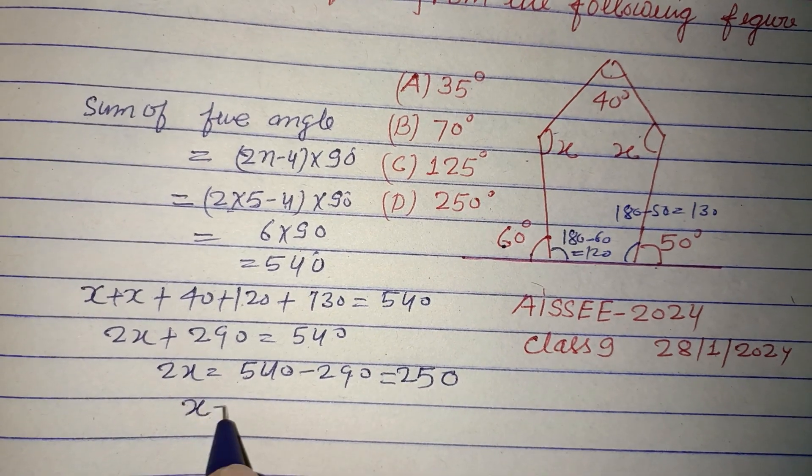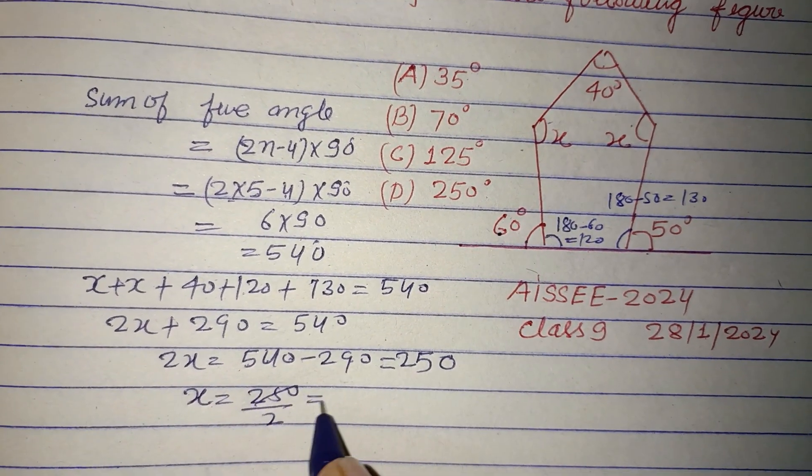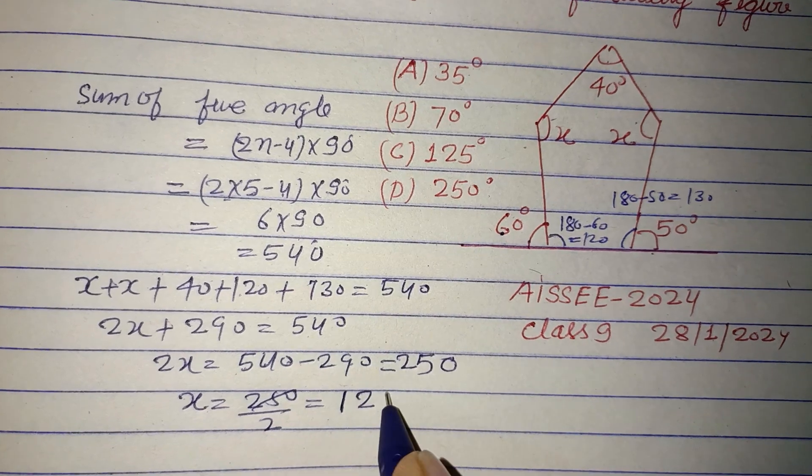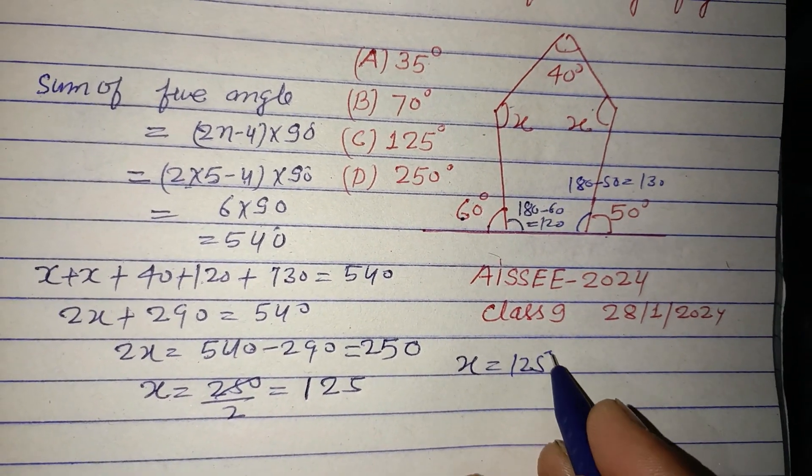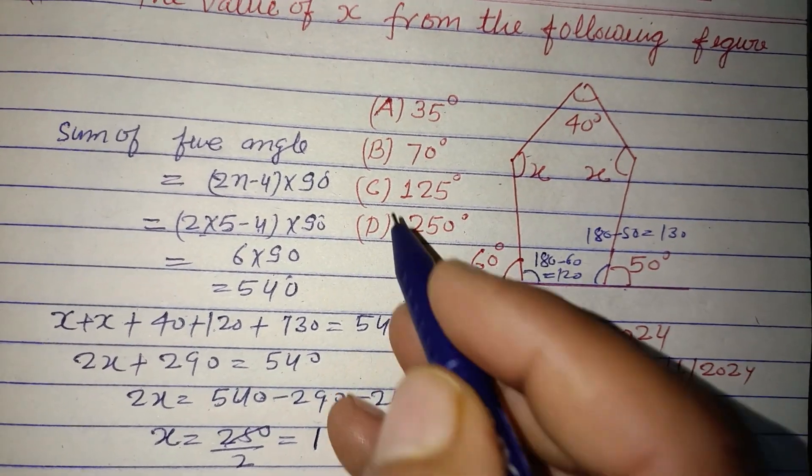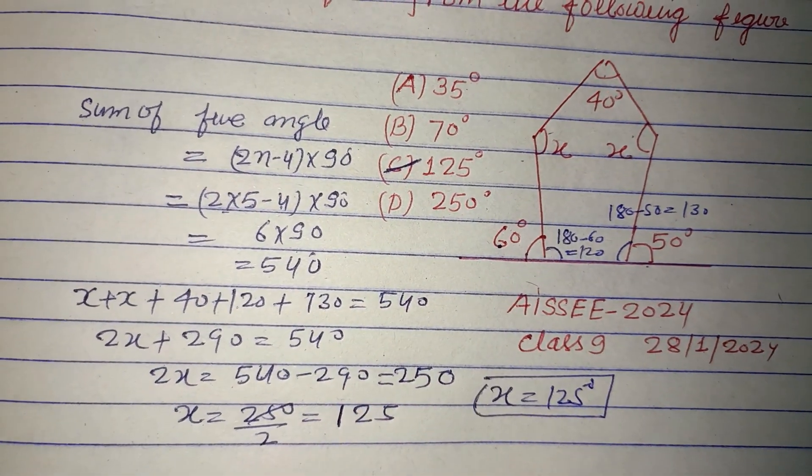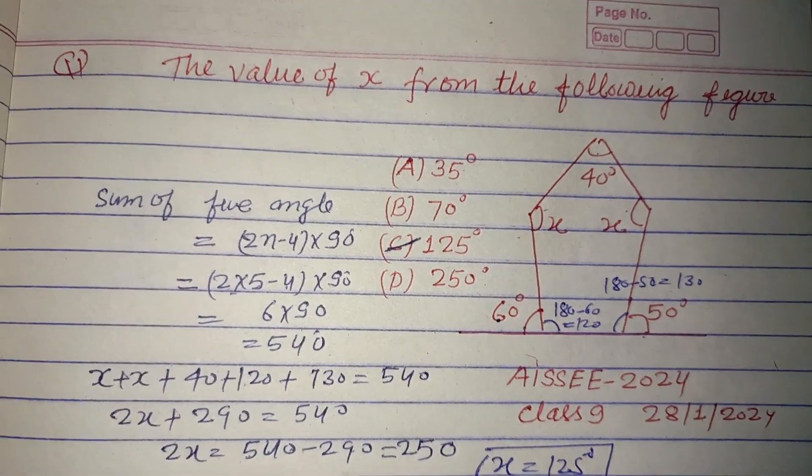Therefore, x equal to 250 over 2, so this is 125. Therefore, x equal to 125 is the answer of this question, which is found in option C. Therefore, option C is correct. I hope you got it.